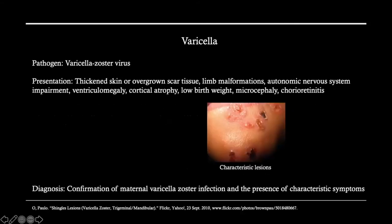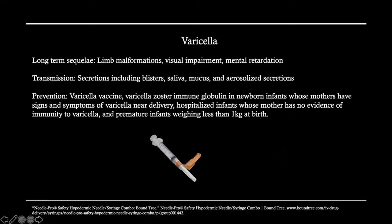Varicella is another virus seen with TORCH. It presents with very distinct scar tissue and overgrown lesions, which are very characteristic of varicella. Furthermore, there are also limb malformations and autonomic nervous system impairment. Long-term concerns include limb malformations, visual impairment, and neurological developmental delays. It is transmitted through secretions of those lesions. Prevention involves the varicella vaccine, and if a newborn is determined to have the disease, varicella zoster immune globulin should be administered.